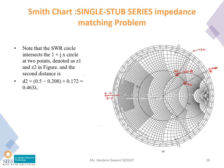We need to find the distance D2 from ZL to Z2 in the clockwise direction. ZL is at 0.208 lambda; moving clockwise, one cycle completes at 0.5 lambda, and a new count starts from 0.0 above the center line. So D2 equals (0.5 minus 0.208) plus 0.172, which equals 0.463 lambda. That is the second possible stub position D2.